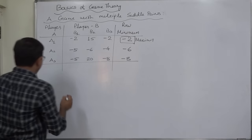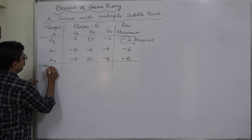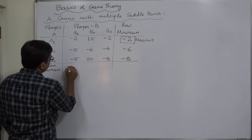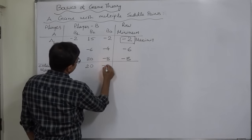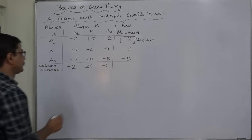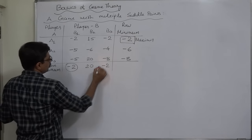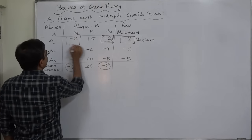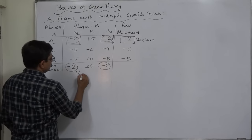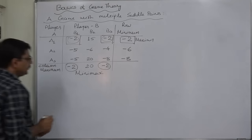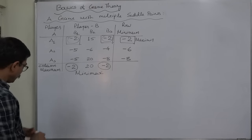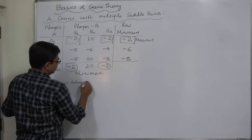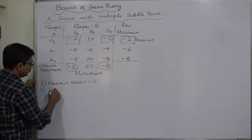Now let us determine the column maximums. The maximum in the first column is minus 2, in the second column it is 20, and in the third column it is minus 2. Let us determine the minimum of these column maximum values — the minimax value is also minus 2.